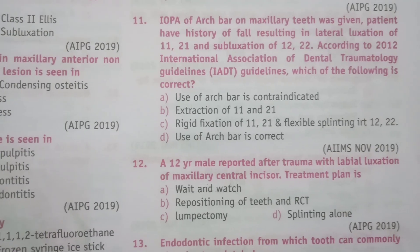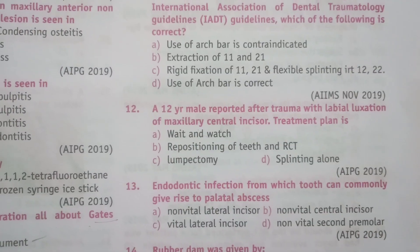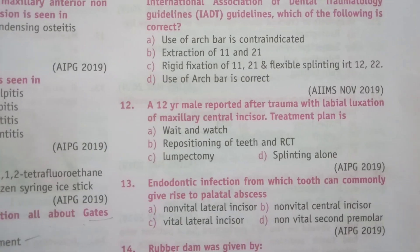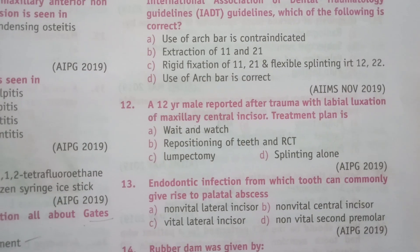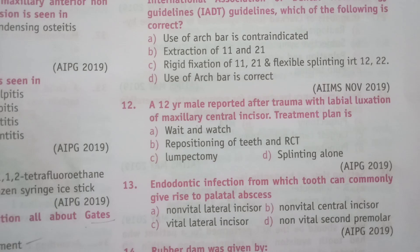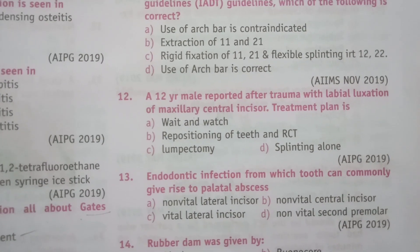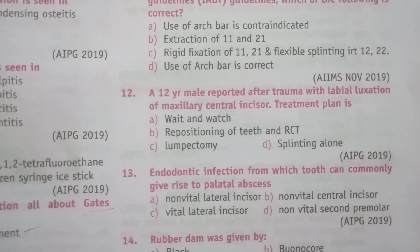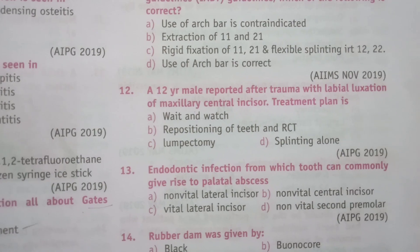Next question: a 12-year-old male reported after trauma with labial luxation of maxillary central incisor. Treatment plan is: wait and watch; repositioning of teeth and RCT; apicectomy; or splinting alone. The answer is B, repositioning of teeth and RCT.